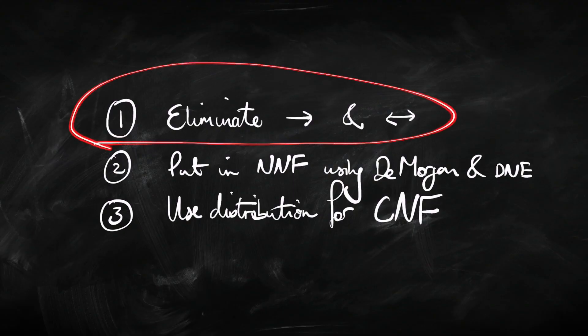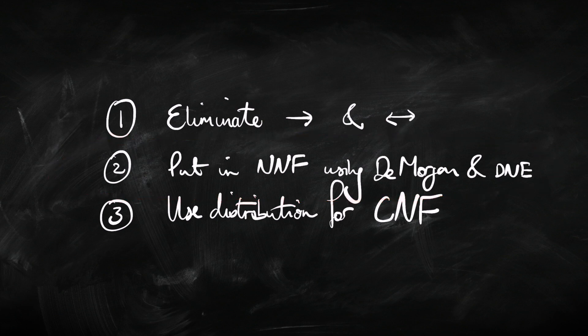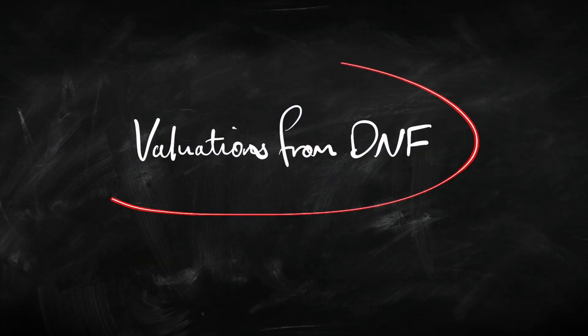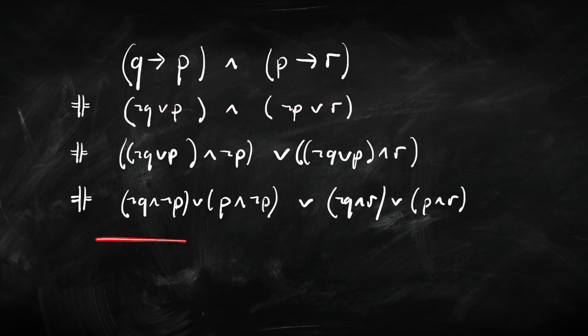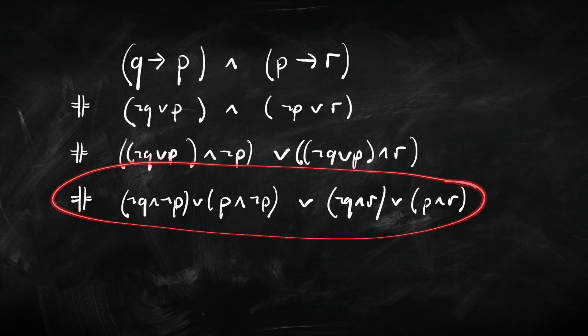Again, we've got a three-step strategy: first, eliminate the arrows and double arrows; put it into negation normal form; then use the distribution rules. I won't run through an example of conjunctive normal form because it's basically exactly the same as putting a sentence into disjunctive normal form. Just before we finish up today, let's go back to disjunctive normal form and see how we can read off valuations from a sentence in disjunctive normal form.